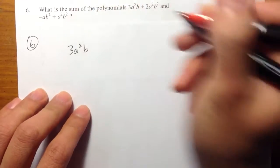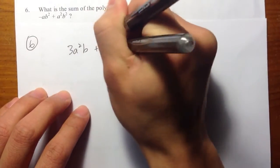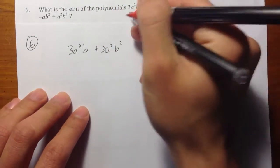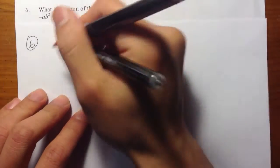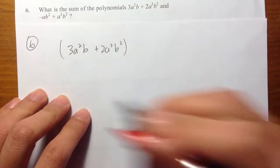So the first term I have is 3a²b + 2a²b². So that's the first thing that we have. Let me put this into a parenthesis.